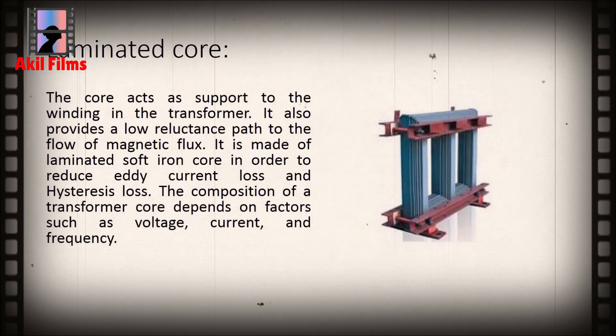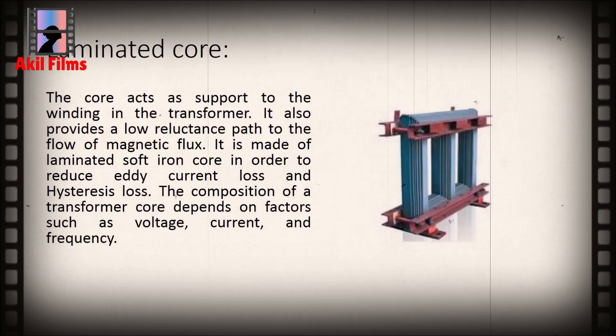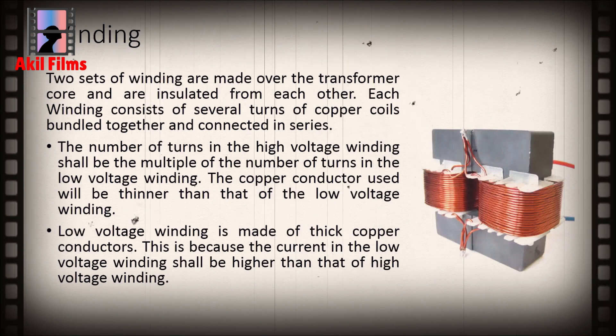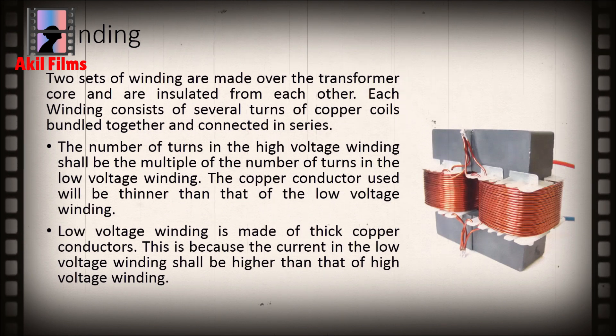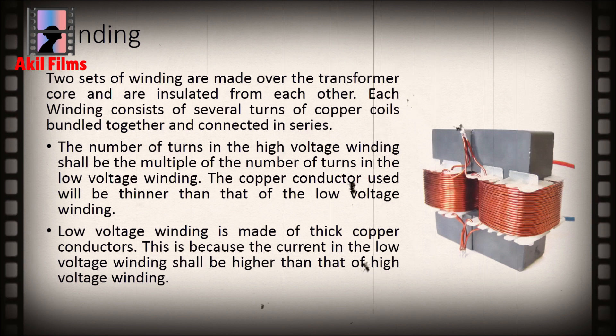The composition of a transformer core depends on factors such as voltage, current, and frequency. Two sets of windings are made over the transformer core and are insulated from each other.